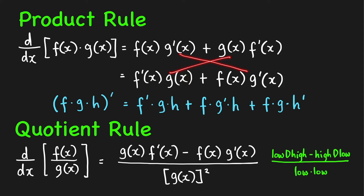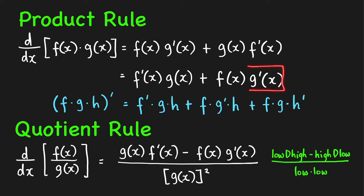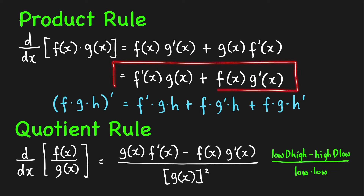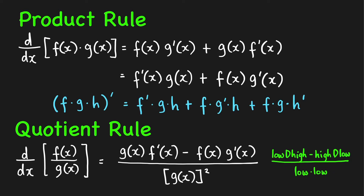So you take the derivative of the first factor first, and then take the derivative of the second factor. I actually prefer this order for the derivative of the product because it will help us remember the quotient rule easily. We can also extend this rule to the derivative of a product of three functions like f times g times h.